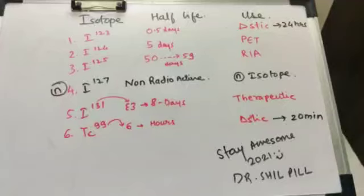Hello everyone and welcome back to the Medical Awesome channel. Today's video is about the uses and half-lives of different iodine isotopes used in various thyroid diseases and scans. The normal isotope is iodine-127 and it is not radioactive.